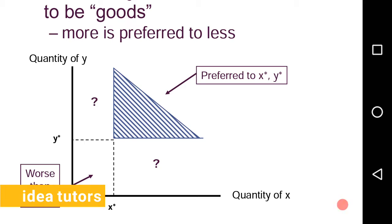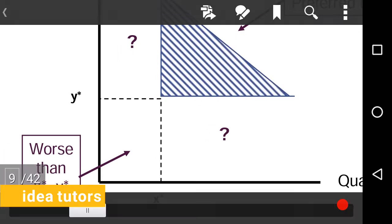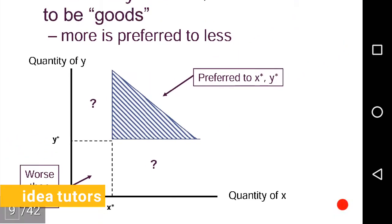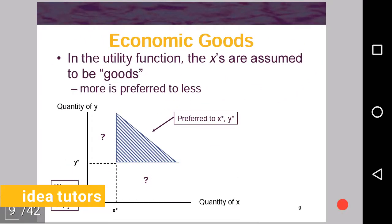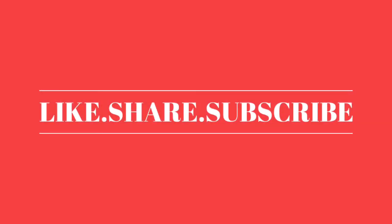This blue line area is more preferred to x star and y star since it has more of both x and y. All the bundles in this area have more quantity of x and y both. Similarly, this white blank area is worse than x star, y star since it has less of both x and y. Since more is preferred to less, everyone will choose x star, y star over this blank area and would choose any bundle available in this blue line area over x star and y star.